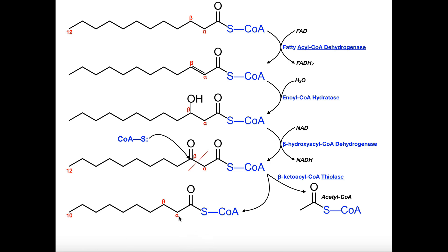After each round, the alpha and beta positions are reestablished. The alpha position is always adjacent to the carbonyl, and the beta position is next to that. So every time thiolase cleaves off the acetyl-CoA, a new alpha and beta position is established. With a saturated fatty acid with an even number of carbon atoms — by far the most common — we just repeat these four steps over and over.